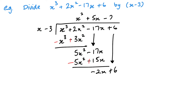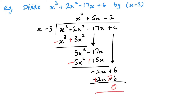Then negative 2x divided by x is minus 2. Minus 2 times x gives minus 2x, and minus 2 times minus 3 is plus 6. I change the signs and add, and this leaves me with 0 at the end. When I'm left with 0, that means 0 remainder — and I'm done. Dividing this cubic by this linear gives me this quadratic.